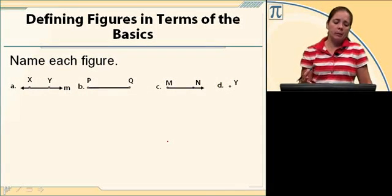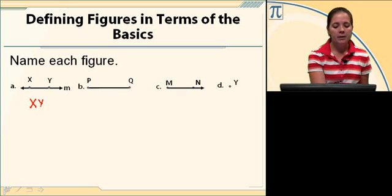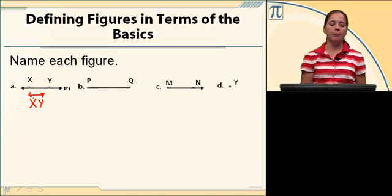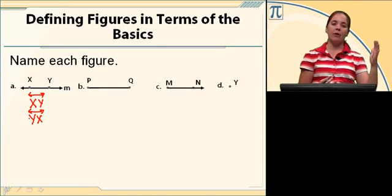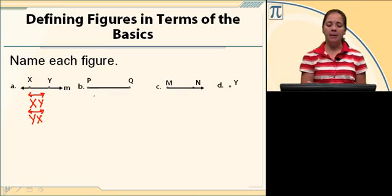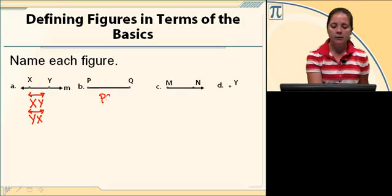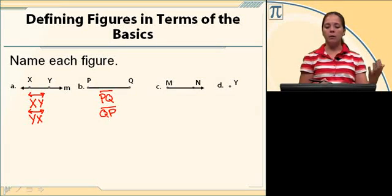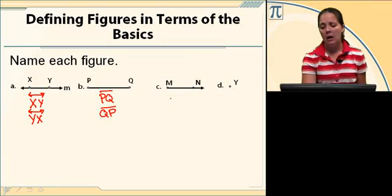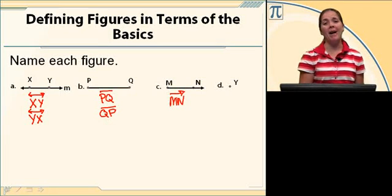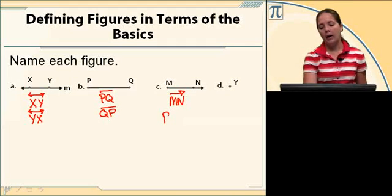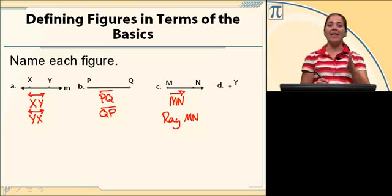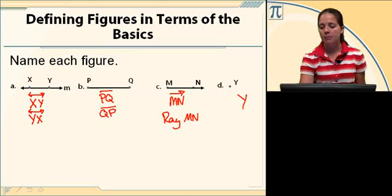Let's go ahead and practice. Here I've got this first one — a line. I'm going to call it line XY using symbol notation with a double arrow on top because it goes in both directions forever. I could call it line YX. Order doesn't matter with a line. I can also write out the word line and then XY or YX. For B, I've got a segment. I can write out the word segment and the two letters in any order, because with a segment order doesn't matter. Or I can use symbol notation: PQ with a single bar on top, no arrows, or QP with a bar on top, no arrows. C is a ray — ray MN. Order matters: endpoint and then the other point. The only way I can name C is with the arrow over the top MN, or write out the word ray and then the endpoint first. Order matters with rays. D is point Y, so just Y.